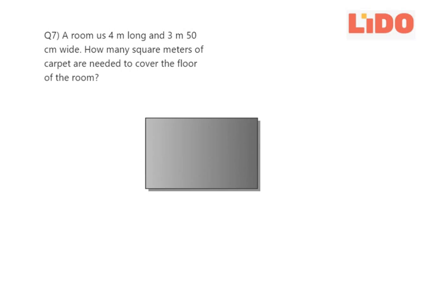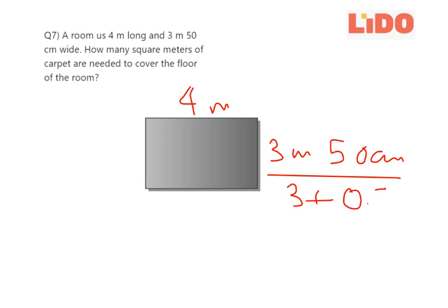The simple trick to do this question is to find the area of the floor in square meters. First, the length is given as 4 meters and the breadth is 3 meters 50 centimeters. Convert this into meters: 3 meters 50 centimeters will be 3 plus 50 centimeters, which in meters is 0.5, equal to 3.5 meters.